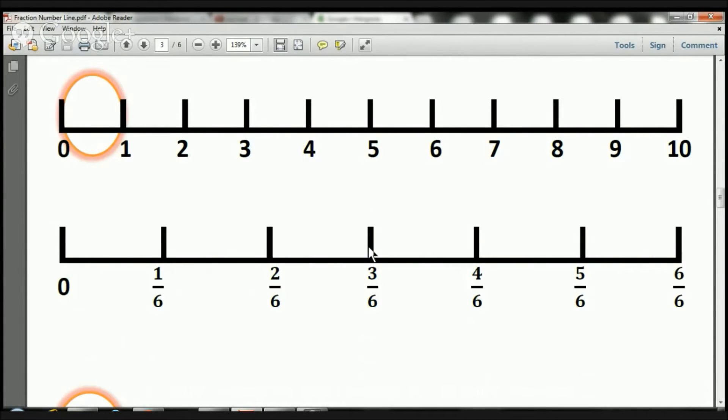From here to here, that is 3 6. We've got 1, 2, 3 pieces, 3 over 6.